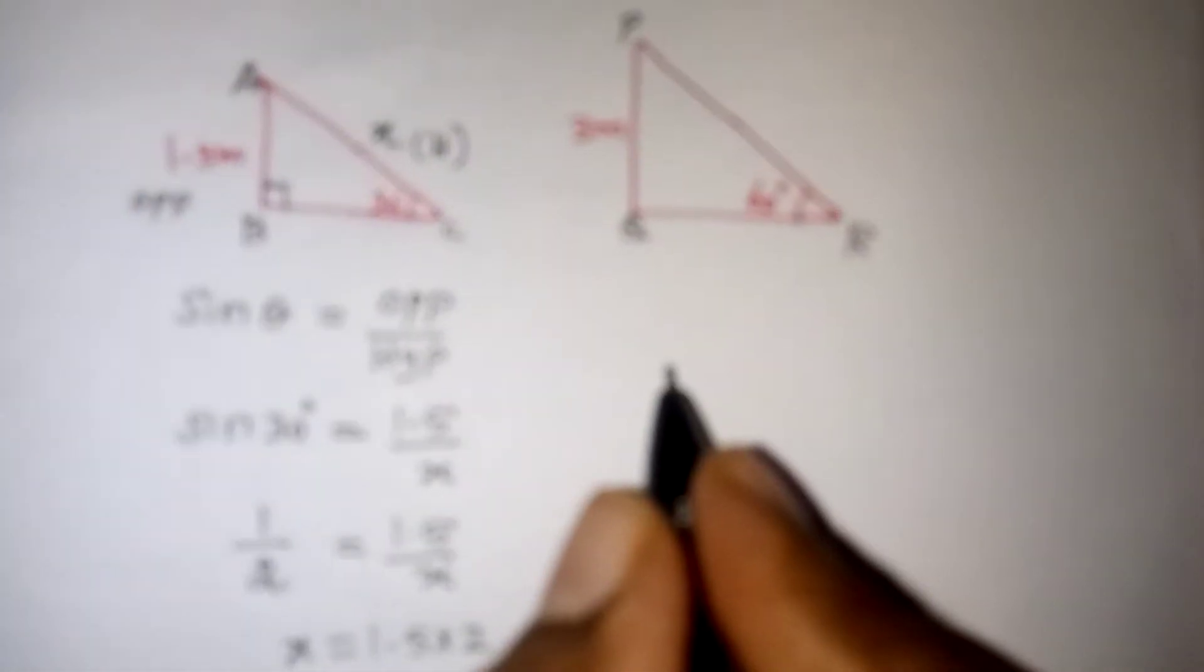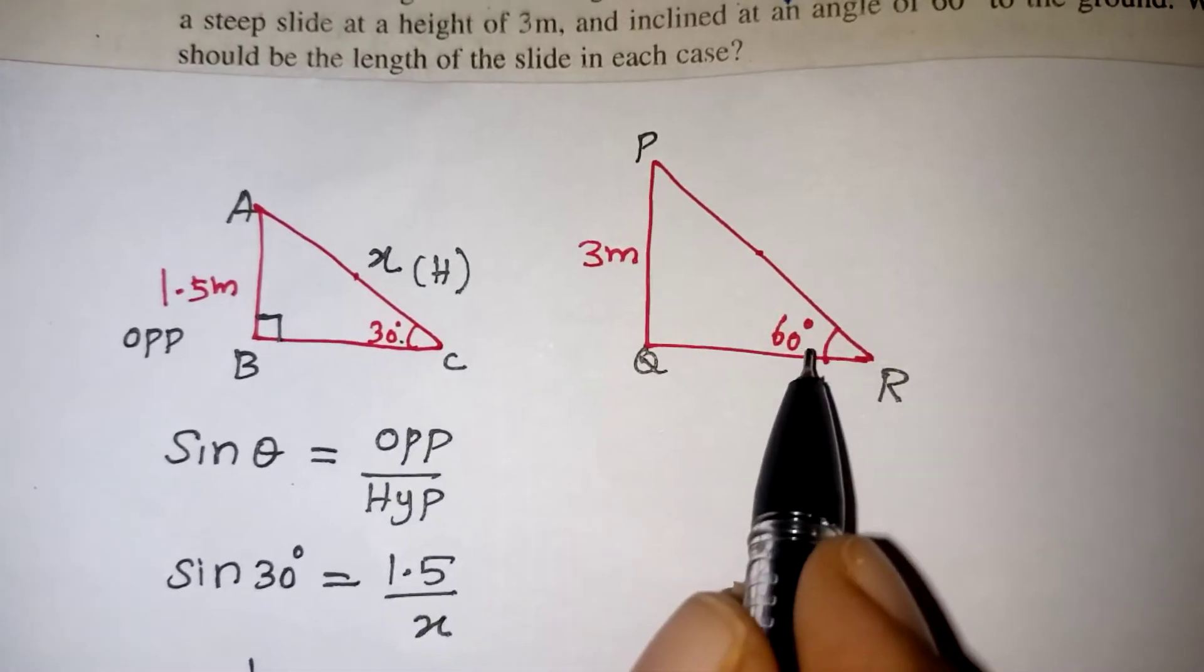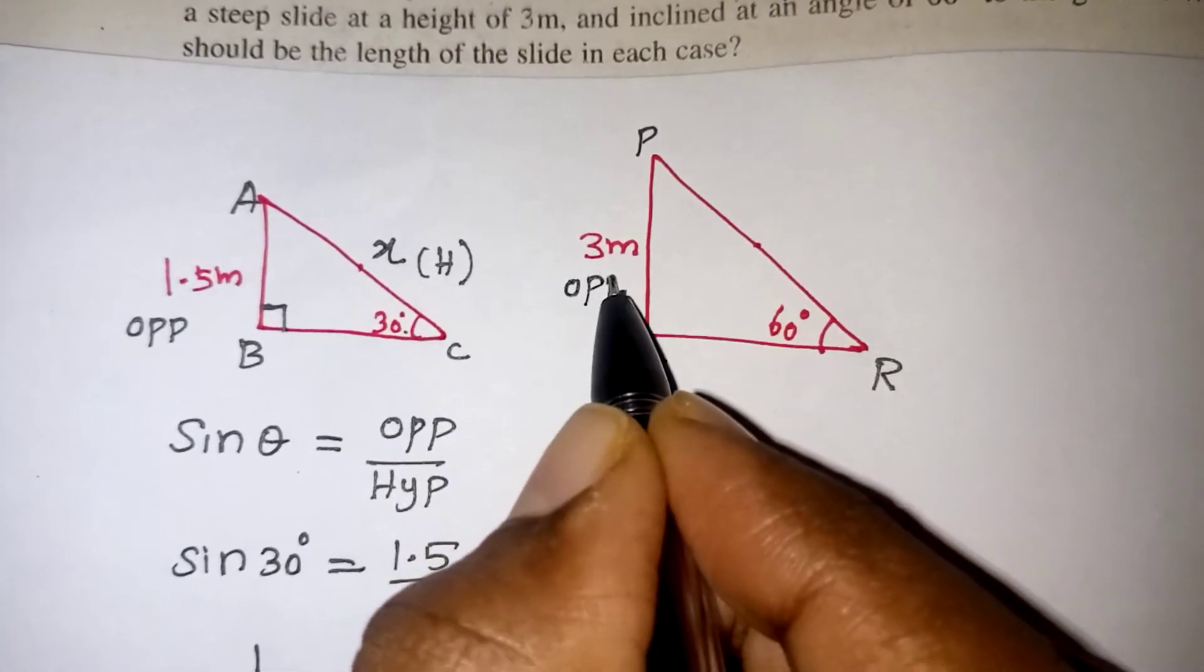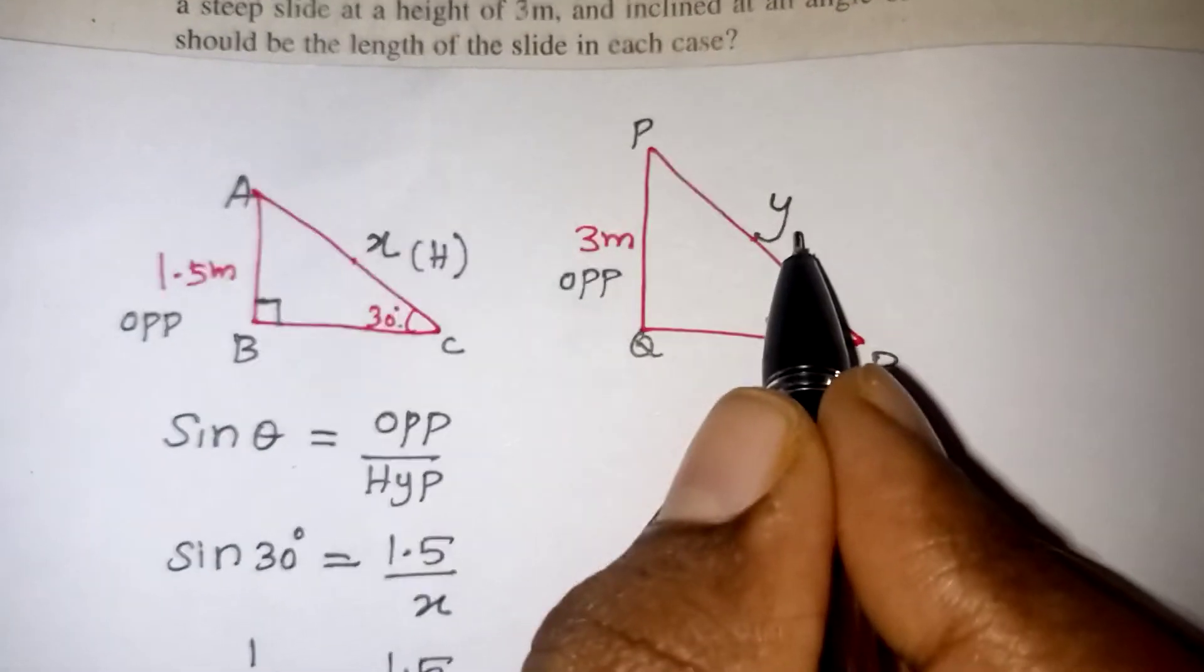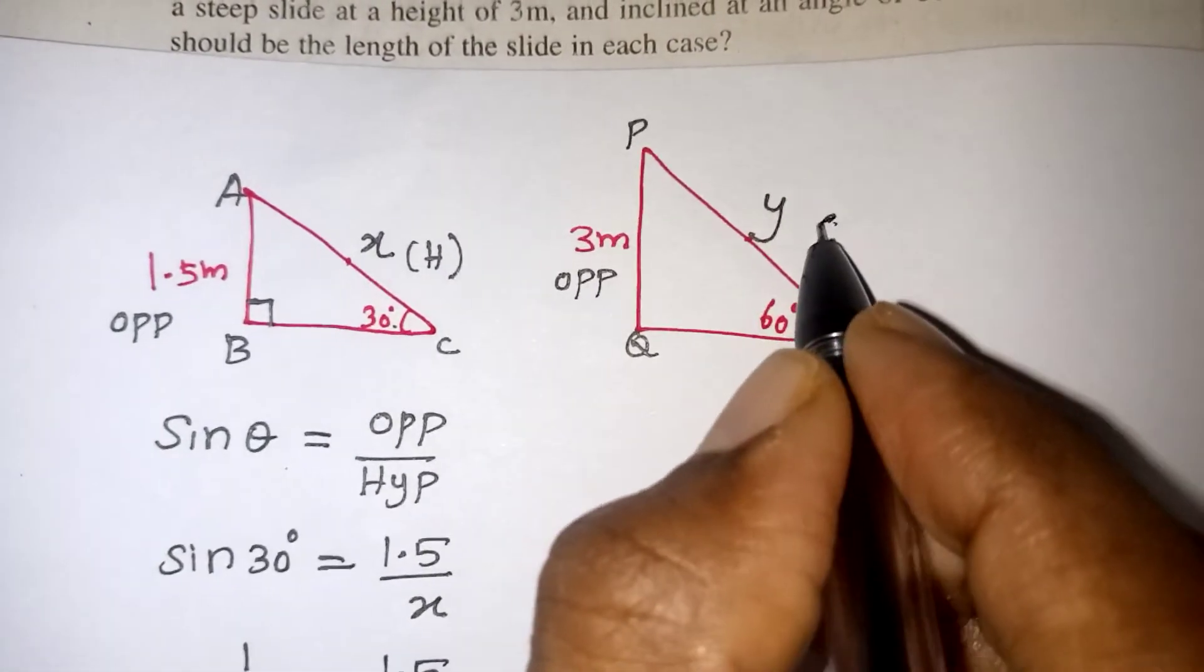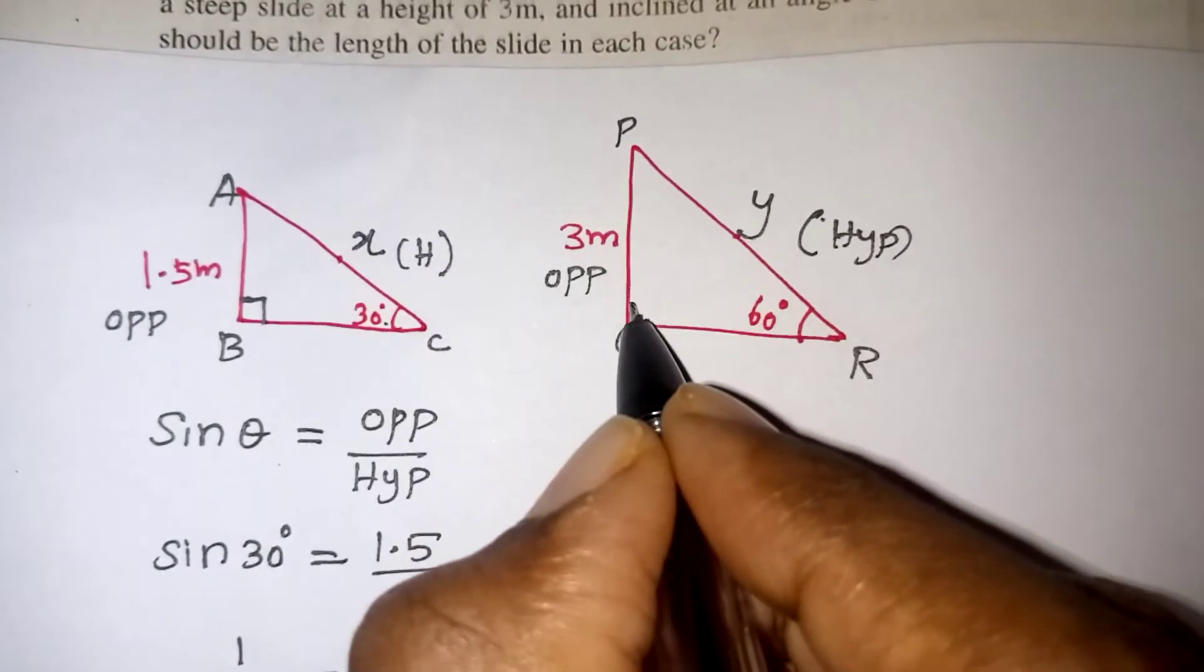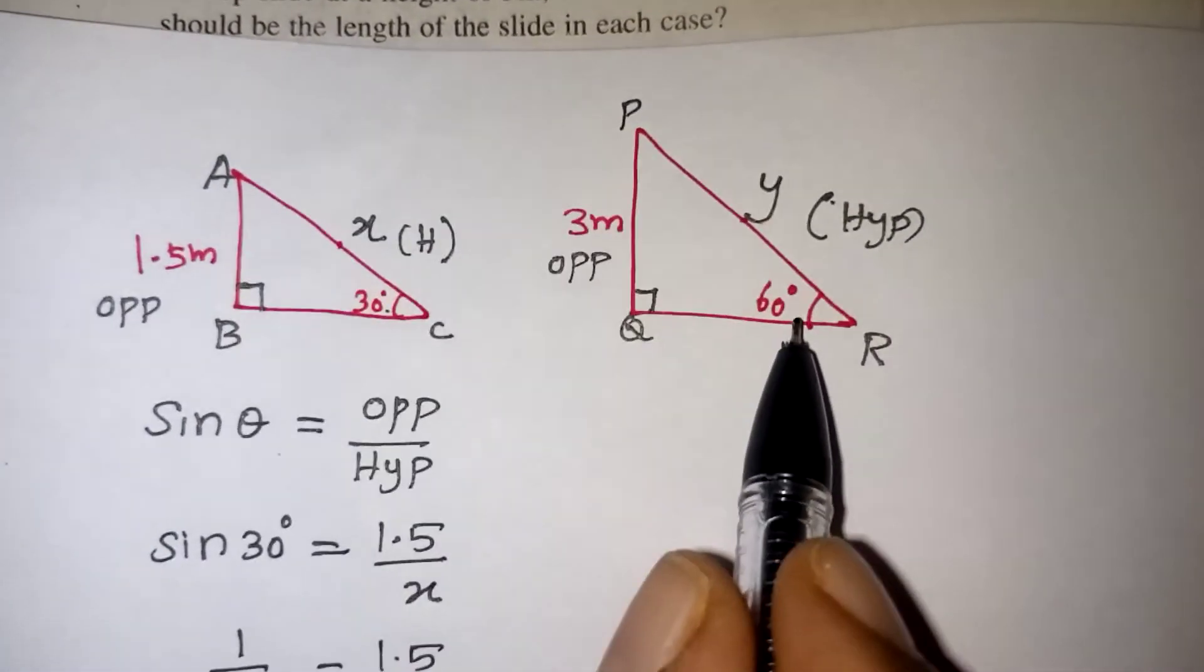Let us go for the elder children. The same problem. Same problem with different measure. Again this angle is given. Opposite side is given. This length let us take it as Y. Because X we have used here. Now this is our hypotenuse side. Because that is the longest side which comes opposite to the 90 degree. It is always hypotenuse side only.